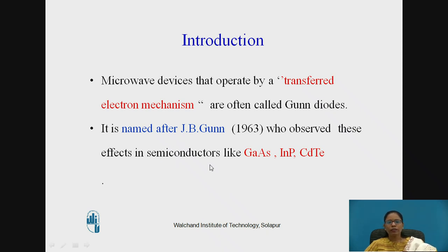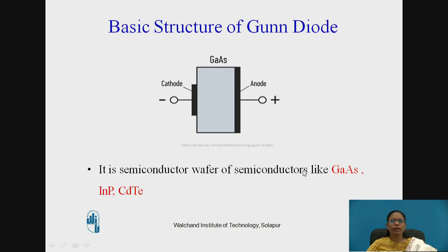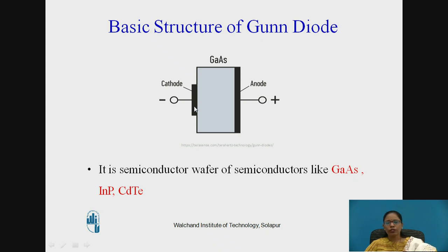It is a semiconductor material such as gallium arsenide, indium phosphide, or cadmium telluride. A wafer of one of these materials, to which the leads — anode and cathode — are attached, works as a Gunn Diode.